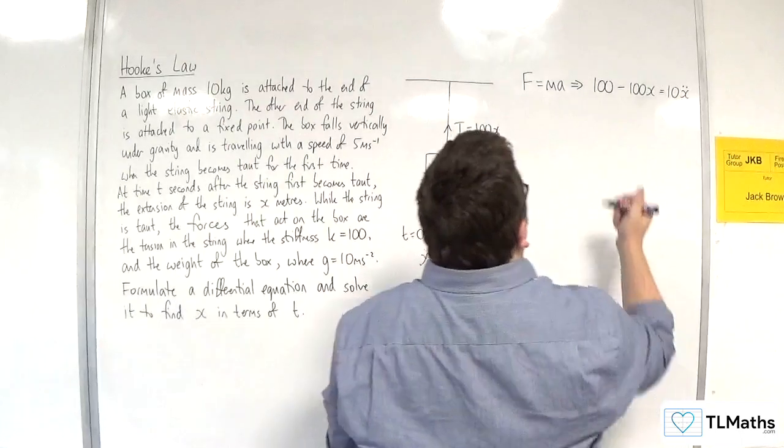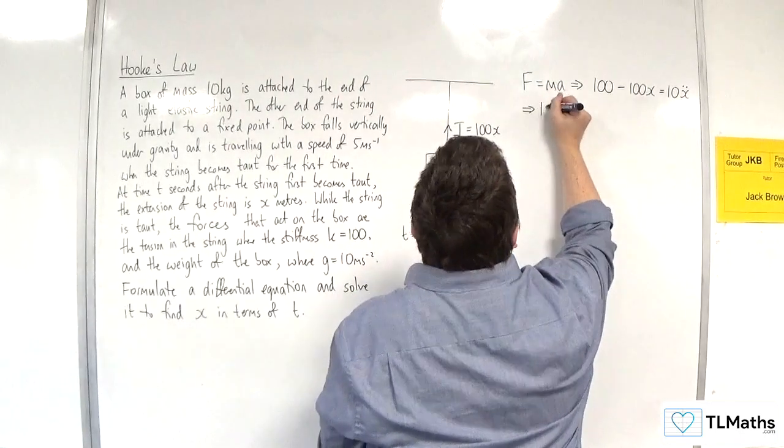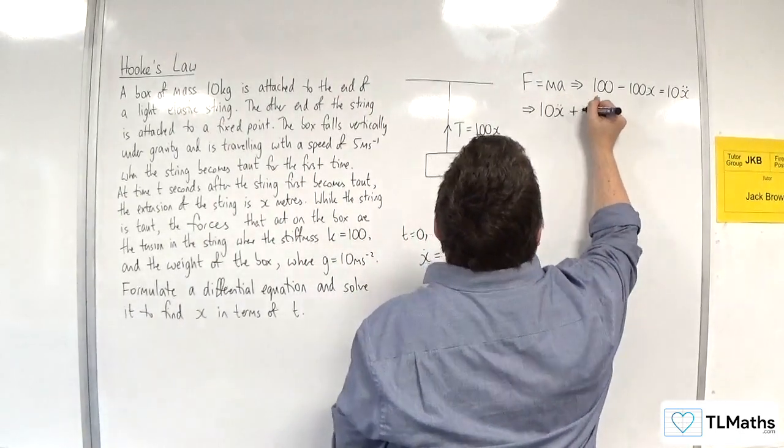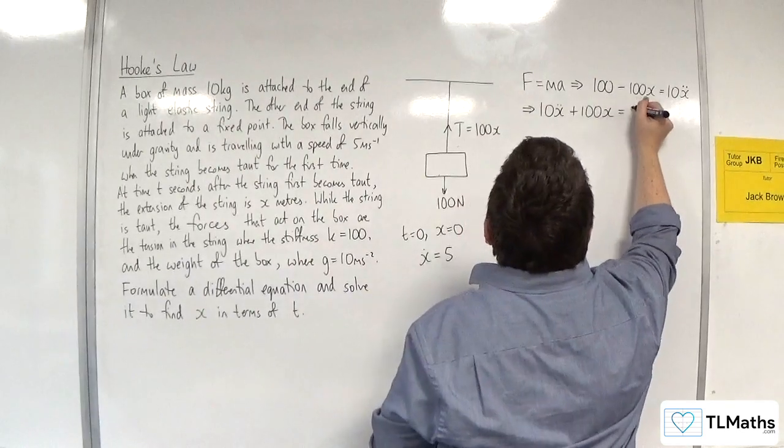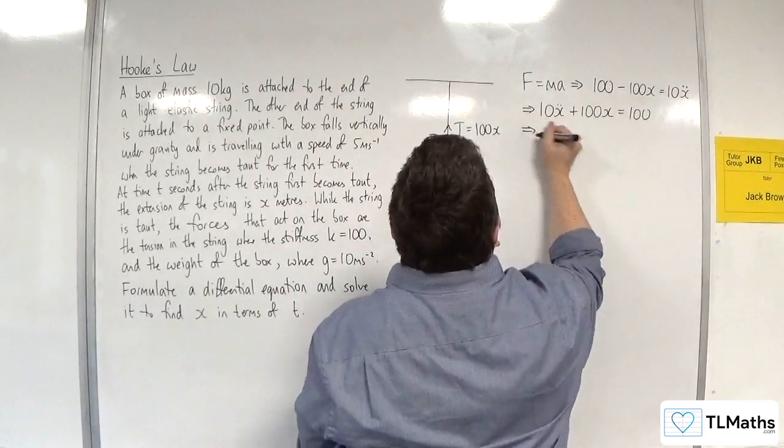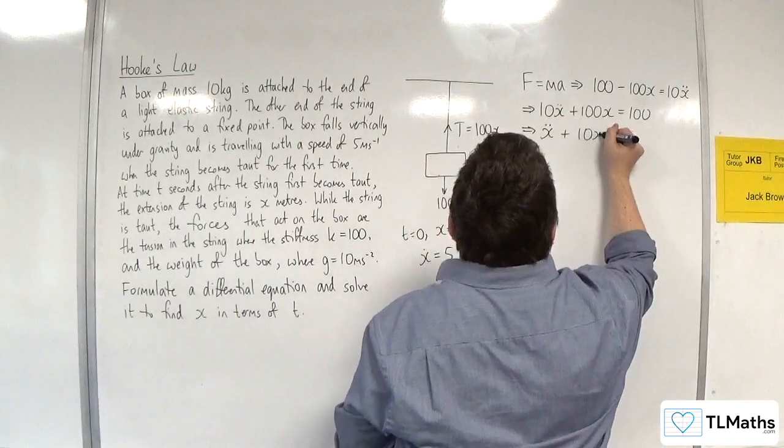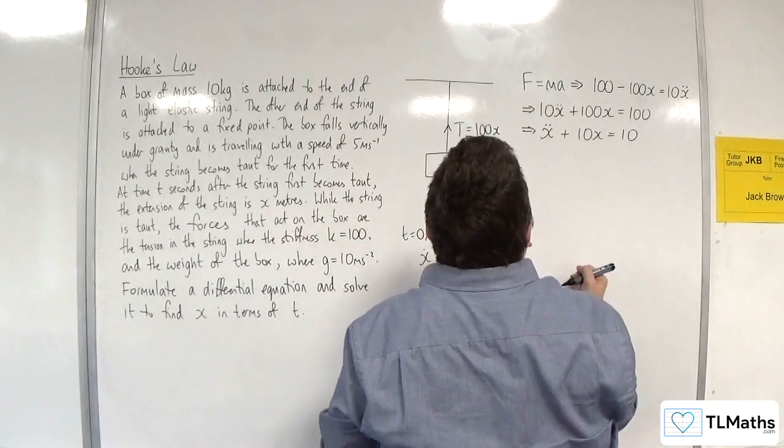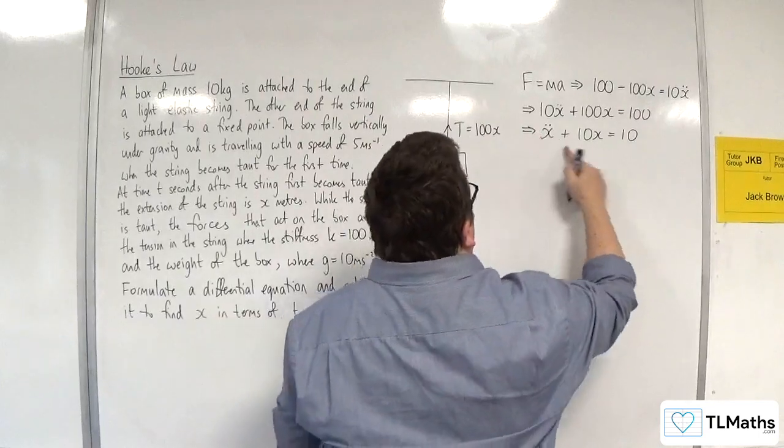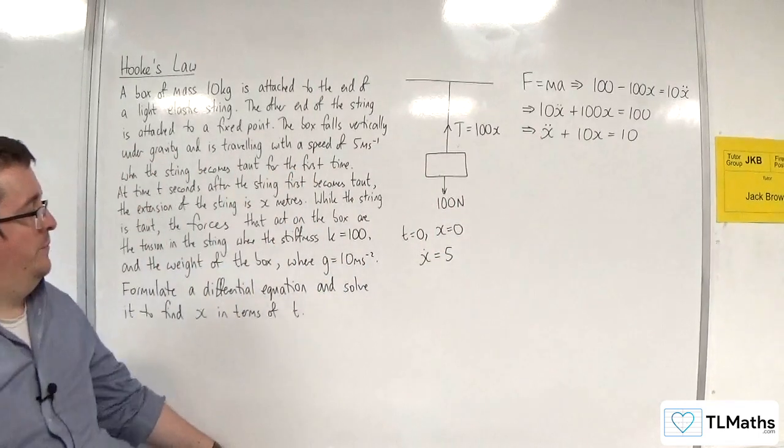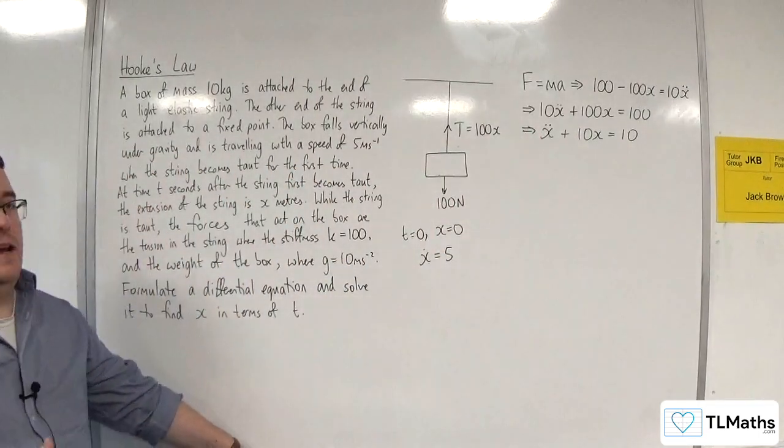So if I rearrange that, I get 10x double dot plus 100x is equal to 100. Divide through by 10, x double dot plus 10x is equal to 10. So this is my differential equation. I now need to solve it to find x in terms of t.